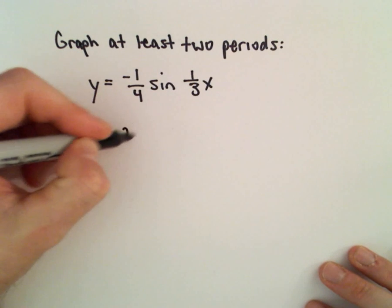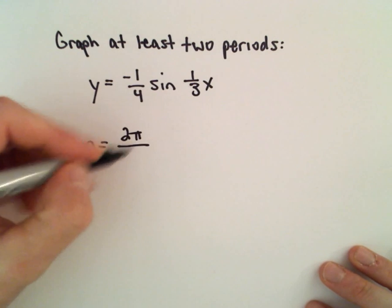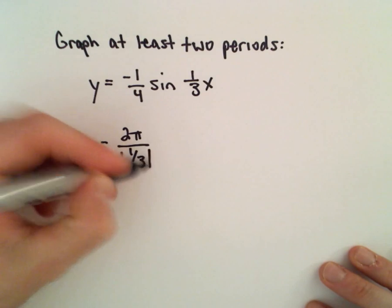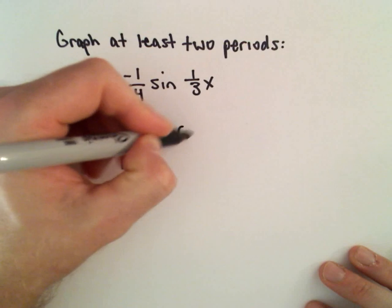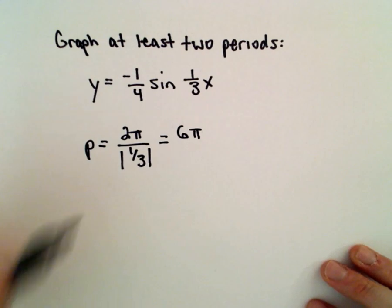The period in this case will be 2 pi divided by the absolute value of b. The b value is one-third, so that's 2 pi divided by one-third, which will give you 6 pi as the period.